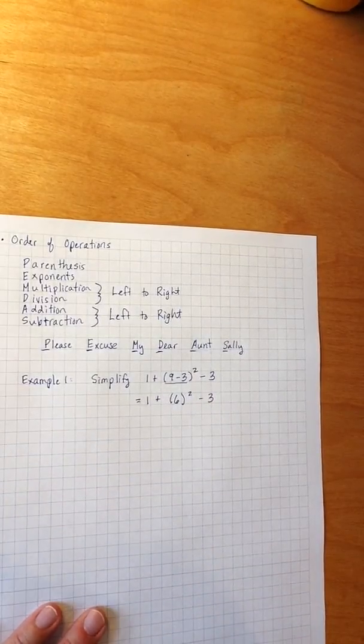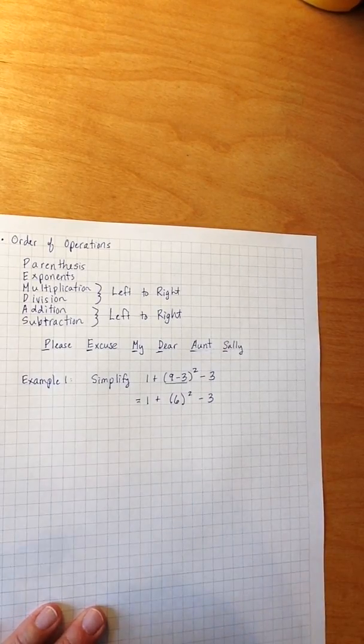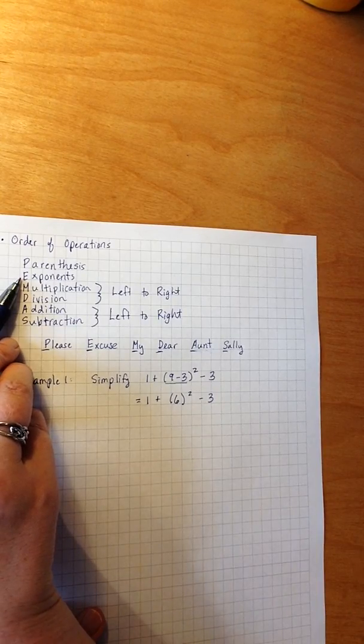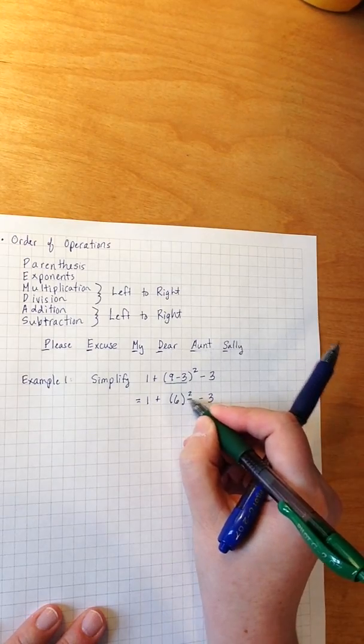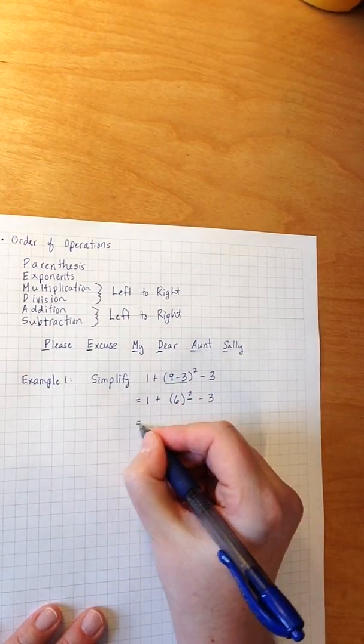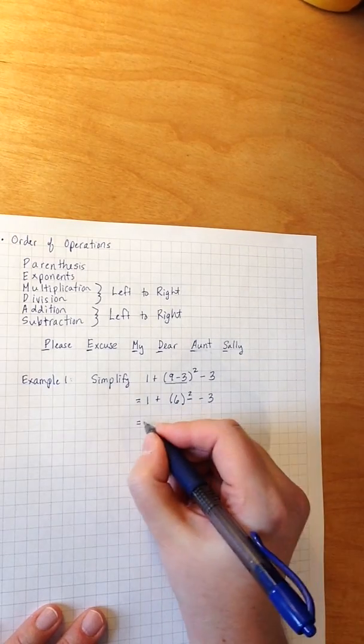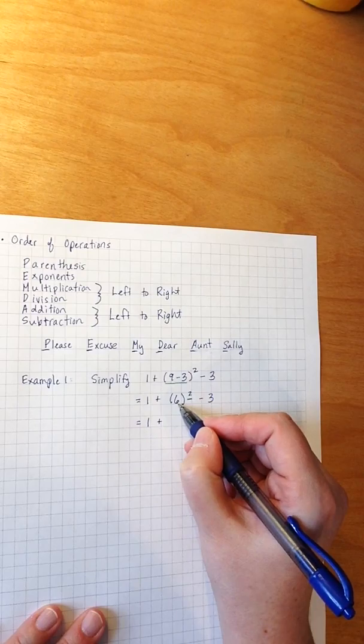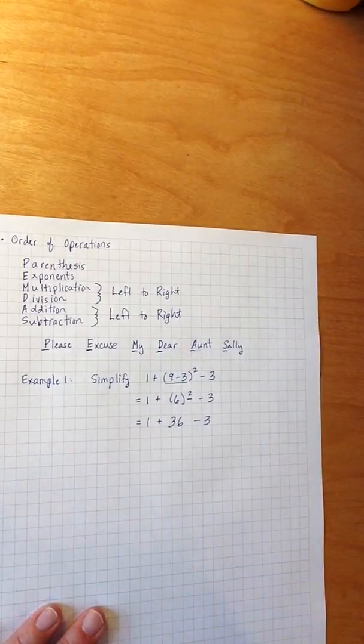I then double-check to see if I have any other parentheses, which I don't. So I move on to the next step, which is exponents. In this case, I do have an exponent, a squared right here. Remember, squared means to multiply by itself. So I have 1 plus 6 squared, meaning 6 times 6, so that's 36, minus 3.